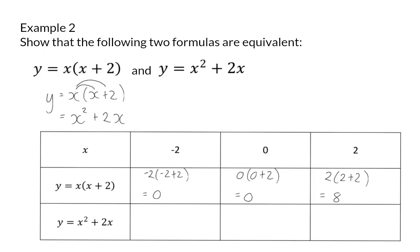Next, I am going to substitute these same input values into the second formula. So, that will be negative 2 squared plus 2 times minus 2, and that is 4 minus 4, which is 0. When I substitute 0 into this function, I will get 0 plus 0. And in the last one, when I substitute 2 in, I will have 4 plus 4, which is 8.